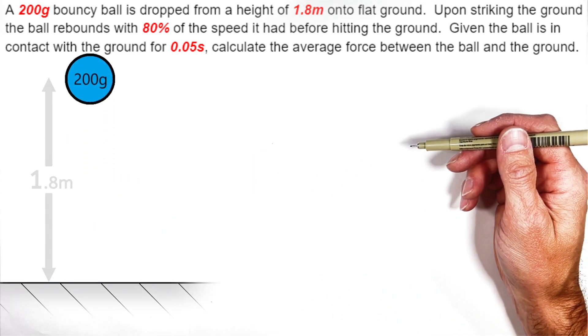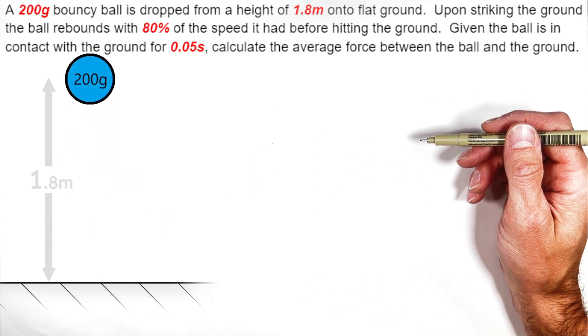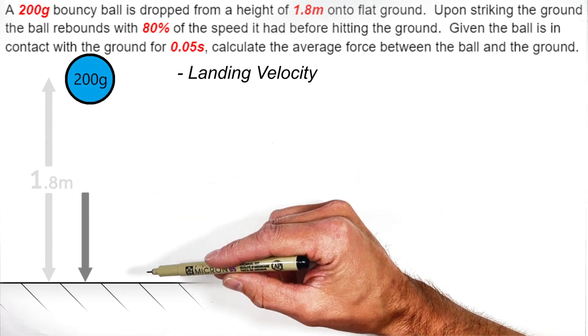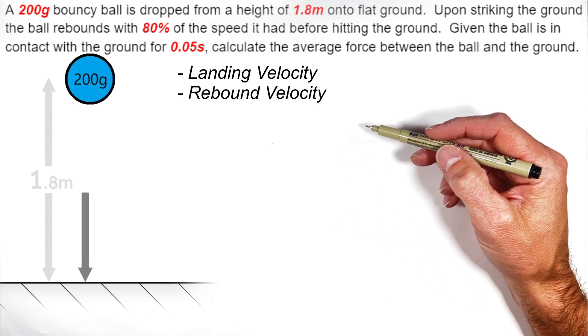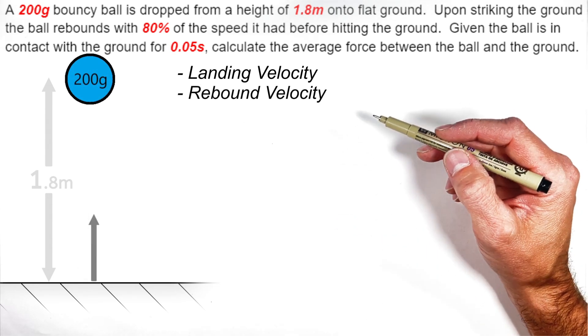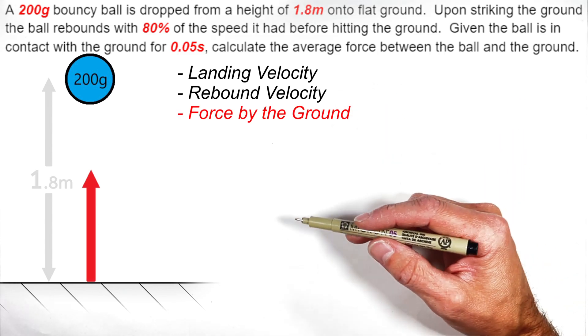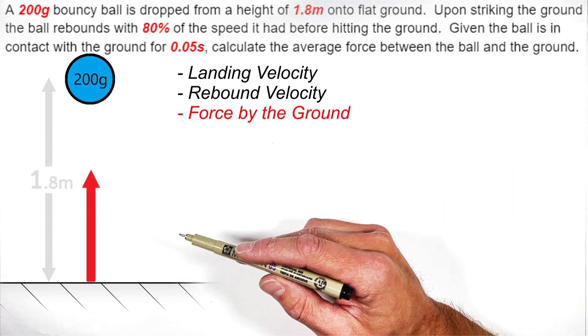The solution to this problem is made up of three phases. First, we're going to solve for the landing velocity of the ball, that is how fast it's traveling when it strikes the ground. Then we're going to solve for the rebound velocity of the ball. And then having solved for both of those velocities, we're going to be able to solve for the average force of the ball as it strikes the ground.